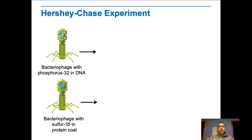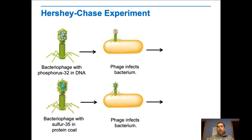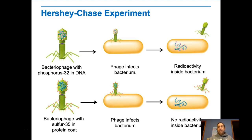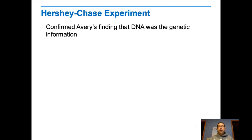They grew the bacteriophages in media that contained radioactive phosphorus, which would label the DNA, and then they grew some more in radioactive sulfur, which would label the proteins. What they found was that when they allowed the phages to infect the bacterium, in the ones with the radioactively labeled phosphorus, the radioactivity was inside the bacteria. But with the radioactive labeled protein, there was no radioactivity inside — it was all outside the cell. So again that confirms Avery's results that DNA, not protein, is the genetic information.